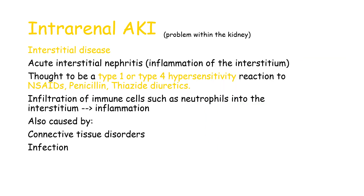Next we have interstitial disease. An example is acute interstitial nephritis — essentially inflammation of the interstitium. This is thought to be a type 1 or type 4 hypersensitivity reaction to drugs such as NSAIDs, penicillin, or thiazide diuretics. In acute interstitial nephritis, you will see infiltration of immune cells such as neutrophils into the interstitium. Interstitial disease can also be caused by connective tissue disorders or infection.